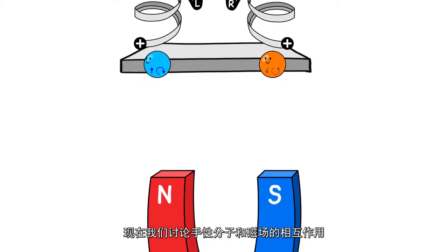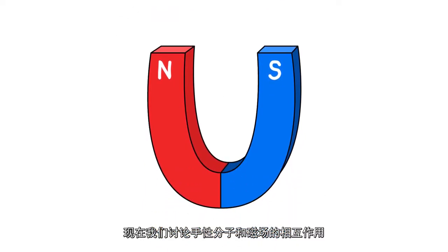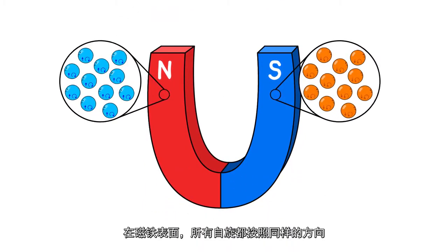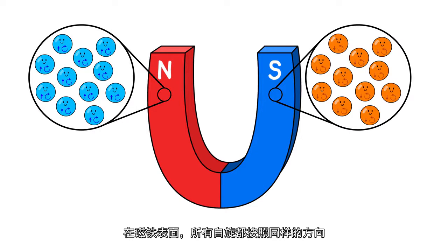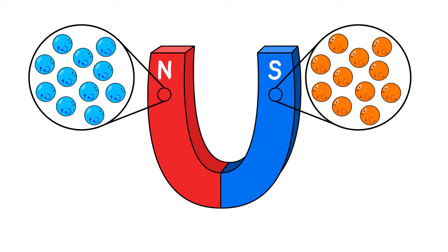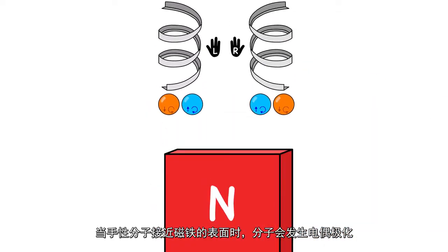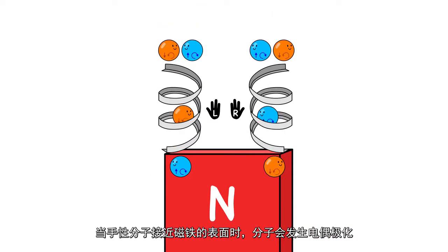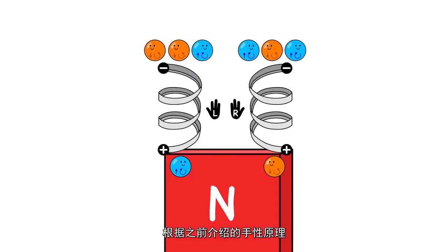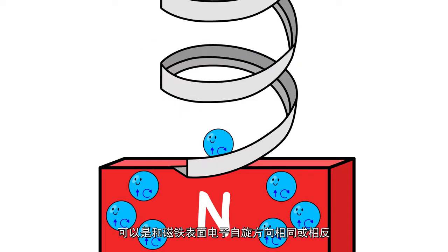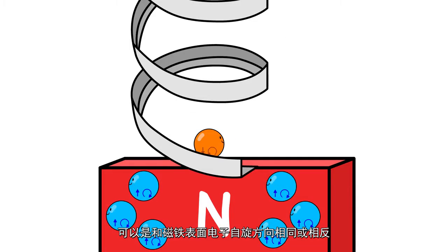Now let's discuss the interaction of chiral molecules with a magnetic surface. In magnetic surfaces, all the spins are aligned in the same direction. As the molecule approaches the surface, it becomes electrically polarized. And depending on its handedness, the spin of the pole pointing towards the surface can be the same or opposite to the spin of the electrons in the surface.